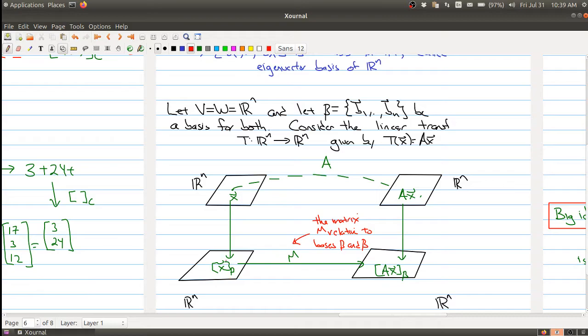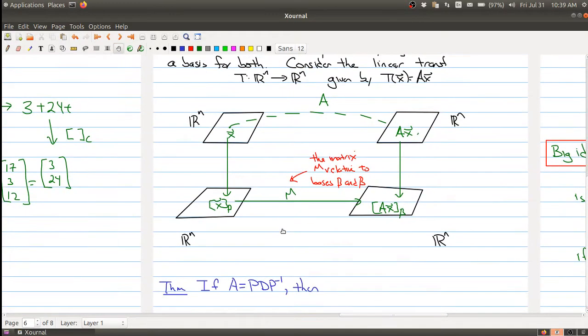So there's a matrix M that allows us to go from here to here. And so what exactly is this matrix M?